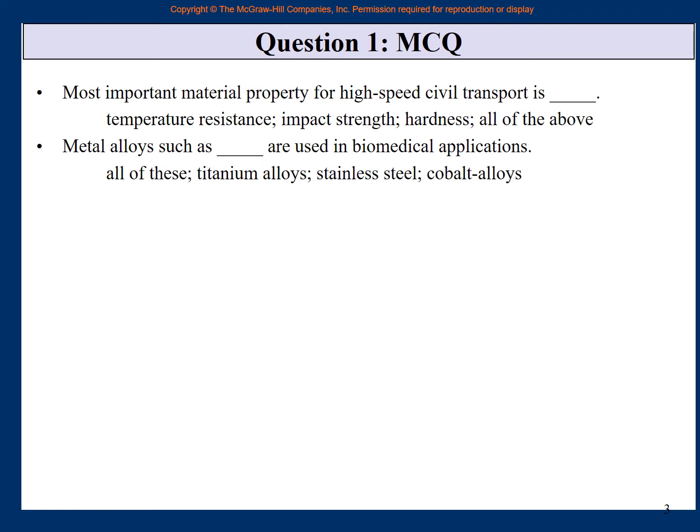Metal alloys such as this are used in biomedical applications. Titanium alloys, stainless steel, cobalt alloys, and all of these. So if you had gone through this introduction chapter well, then you will see that all the three, titanium, stainless steel, cobalt, all these alloys are used in biomedical applications. So the correct answer will be all of these.